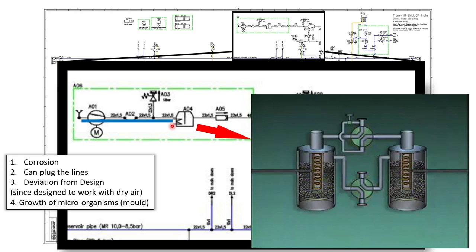There is one problem with compressed air: it contains a lot of humidity. Humidity causes corrosion wherever it contacts metal, can plug lines if water coagulates and settles, and causes deviations from the design characteristics which assume dry air. Humidity can also cause growth of microorganisms like mold. For these reasons, we dry out the air using an air dryer.